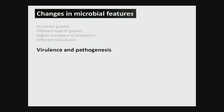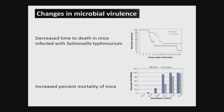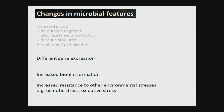Virulence and pathogenesis also change — in some types of microorganisms the virulence is higher in space. For example with salmonella, mice die more quickly and mortality is higher, and even with a lower dose the mortality is still high. There are also other changes such as different gene expression, biofilm formation, and increased resistance to other stress conditions.